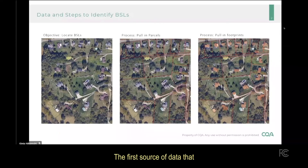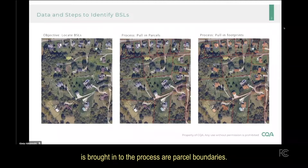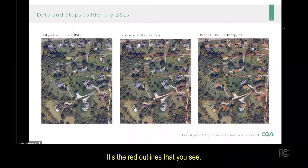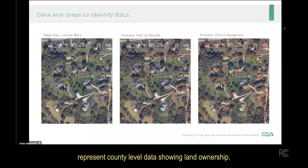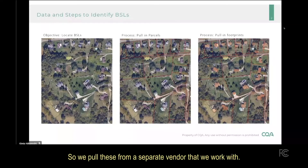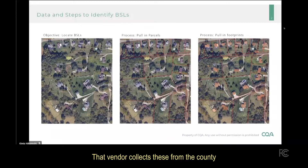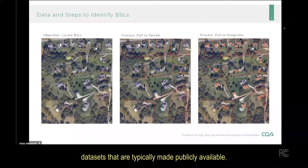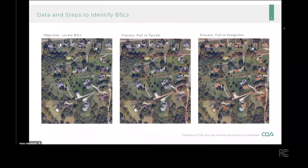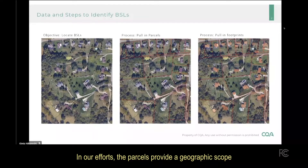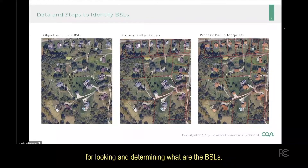The first source of data brought into the process are parcel boundaries — that's the red outlines you see in the center image. These parcel boundaries represent county-level data showing land ownership. We pull these from a separate vendor that collects them from county datasets, which are typically made publicly available, and then we adjust those boundaries into our process. The parcels provide a geographic scope for determining what the BSLs are.